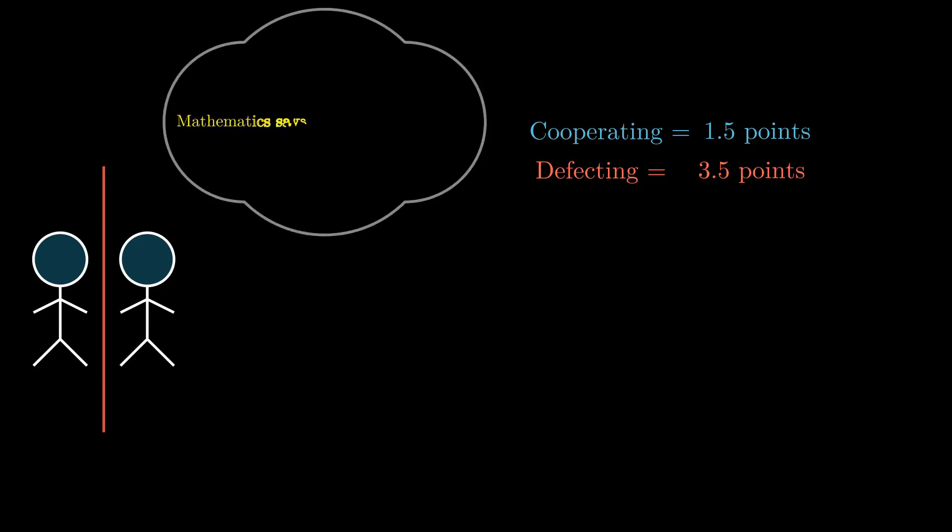If you would like to think of it more mathematically, here's something you could do. Let's say you are cooperating. You either get zero points or you get three points. On average, you get 1.5 points for cooperating. And if you are defecting, you either get 5 points or you get 2 points. On average, it amounts to 3.5 points for defection. So through individual lenses, defecting seems to be the best option for each prisoner.